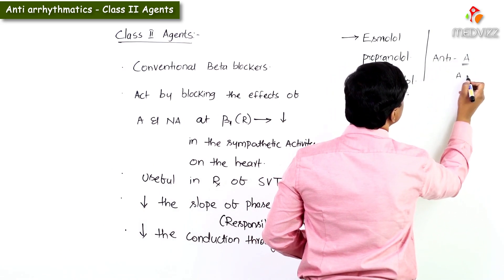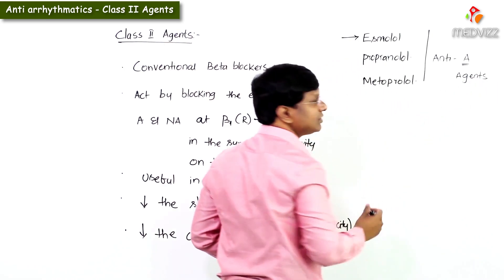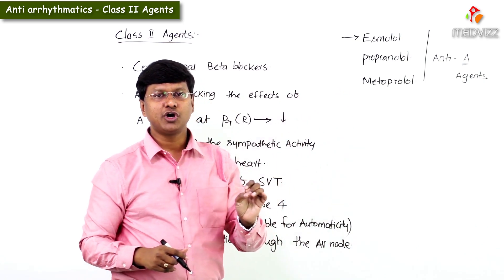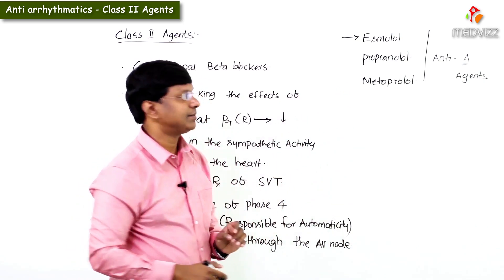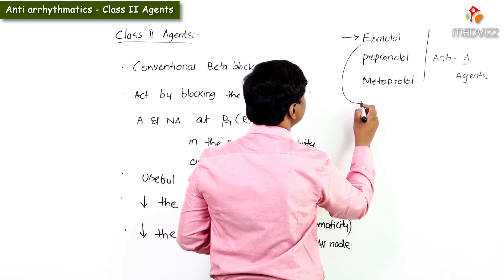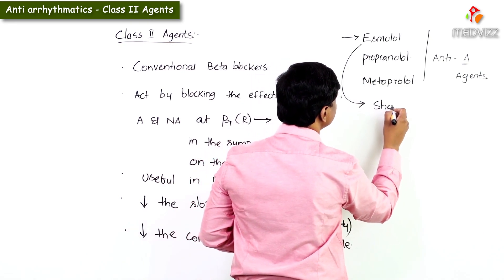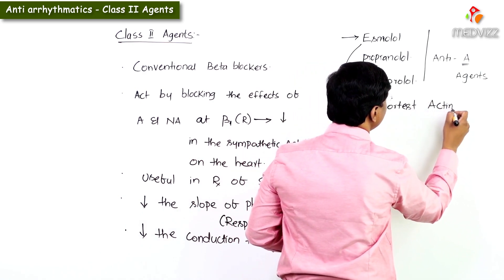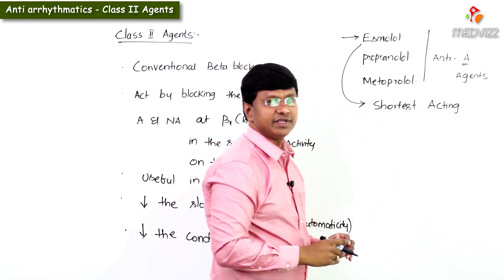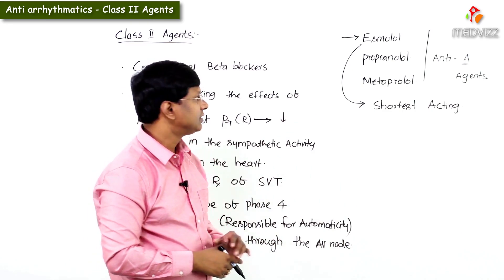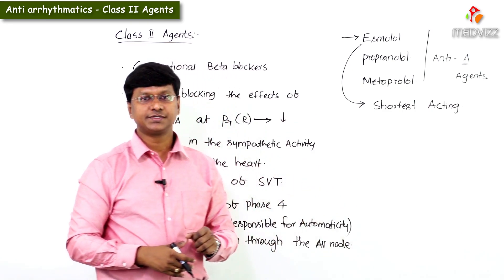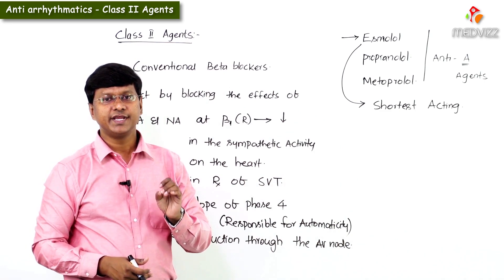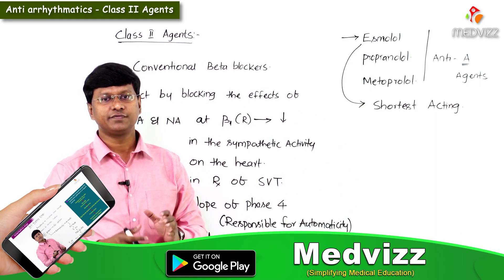An important multiple choice question point here: esmolol is the shortest acting beta blocker.